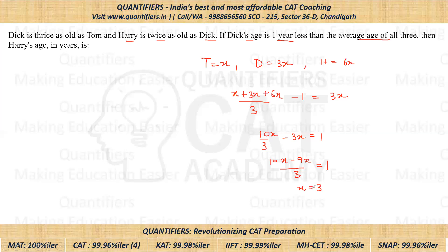So X equals three. We have to find the age of Harry, which is six times X, so the answer would be six into three, that is 18. A very easy question. I hope you were able to find it. Thank you everyone.